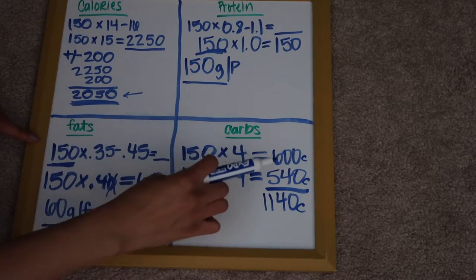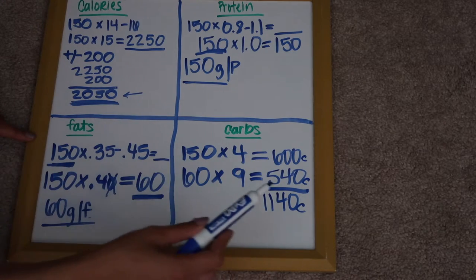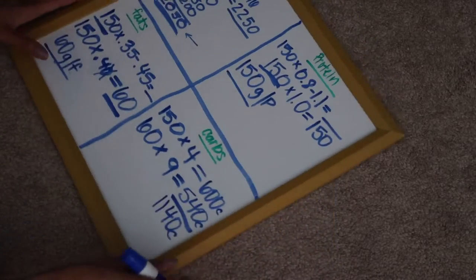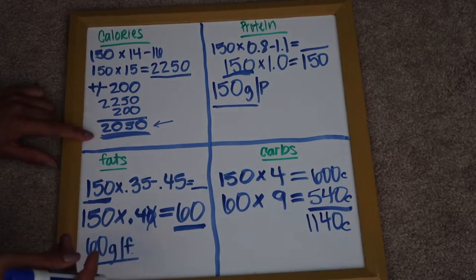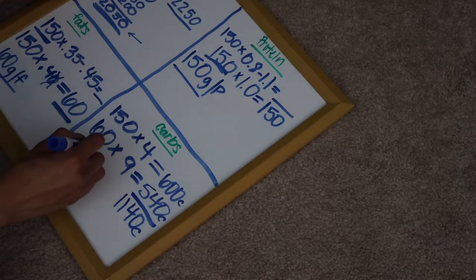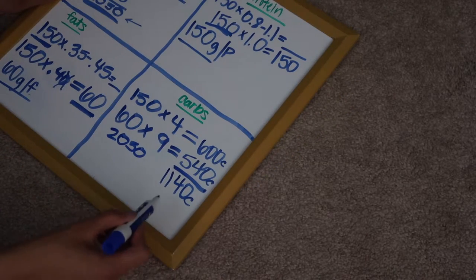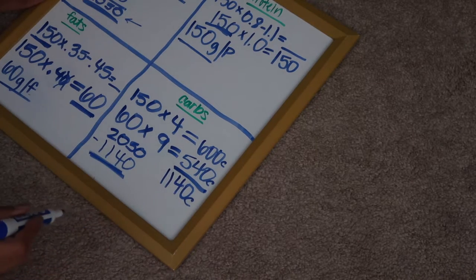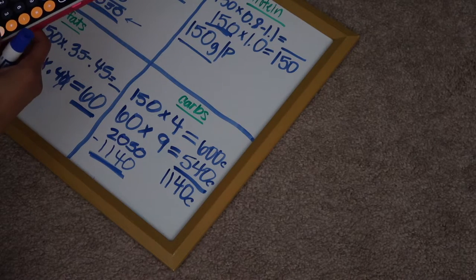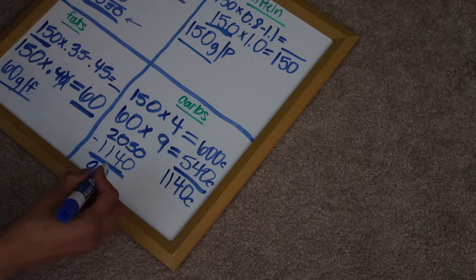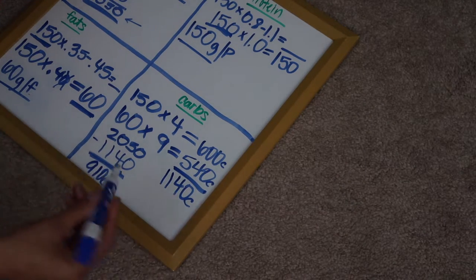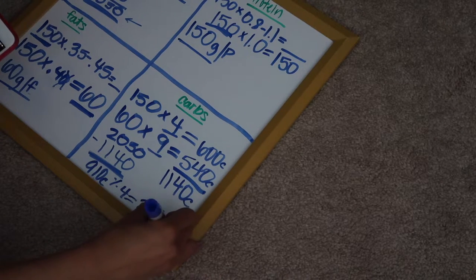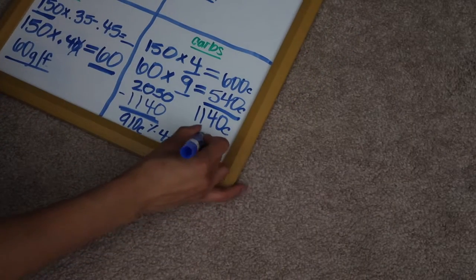So my 150 grams of carbs should be around 600 calories. My 60 grams of fat should equal out to 540 calories. And then the total between those two calories is 1140 calories. And then we take our number right here, which is my total calories. And then you subtract it from this number right here. So 2050 minus 1,140 equals 910. And this is your remaining calories. And then you're going to take 910, and then you're going to divide that by four. And that gives me 227.5.